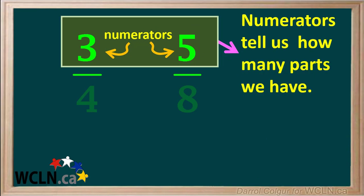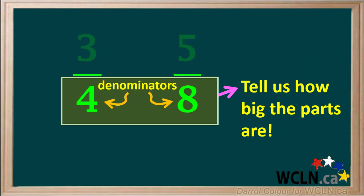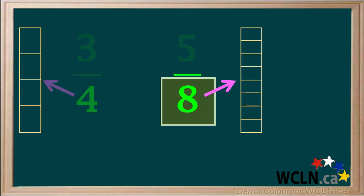The trouble is, numerators tell us how many parts we have, but they don't tell us how big each of the parts are. Remember, it's the denominators that tell us how big each of the parts are. In the fraction 3 quarters, the denominator 4 tells us a whole object is divided into 4 parts. But in the fraction 5 eighths, the 8 tells us the whole object is divided into 8 parts.